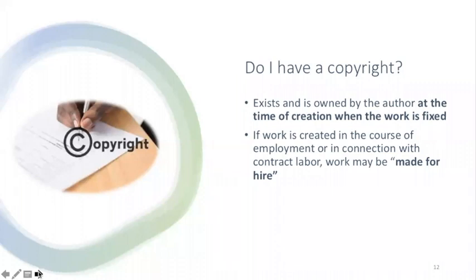Speaking of copyright ownership, how do you know if you have a copyright? Copyright is created at the time the work is first fixed in a tangible form. In practical terms, this means that you own a copyright as soon as you first record the work in a form that can be shared with others. This means that you do not have to register your work with the federal copyright office in order to actually own a copyright. In the context of creating things for an employer, copyright of work product made in the course of employment is typically owned by the employer. For more specific information regarding works made for hire, please see our accompanying toolkit for copyright.